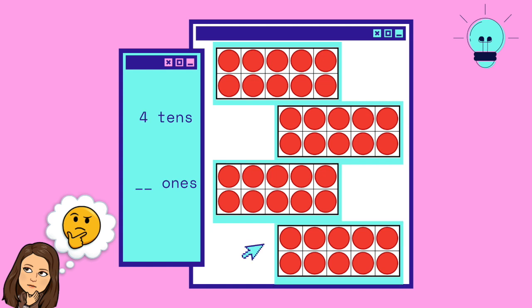Now watch as I count how many 1s there are. Here I have 10, 20, 30, 40. There are 40 1s.